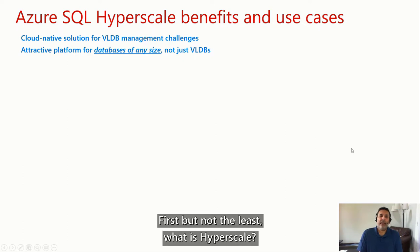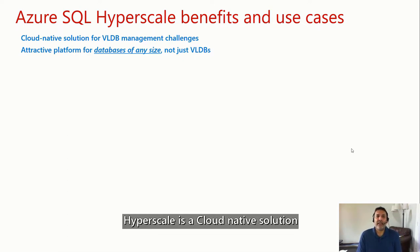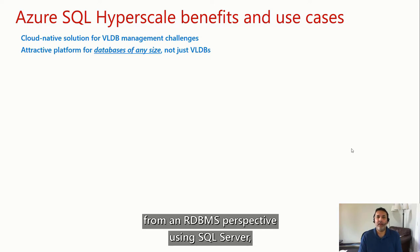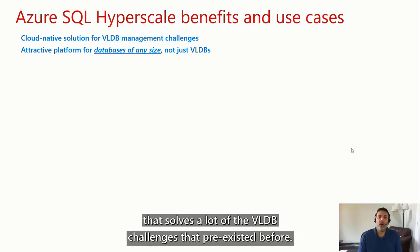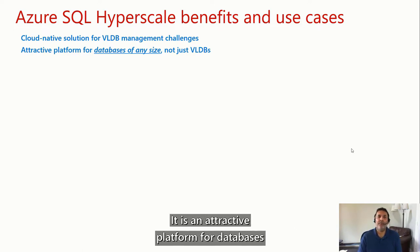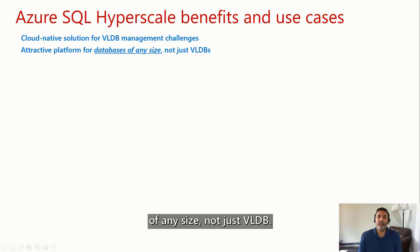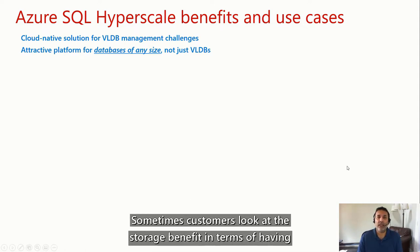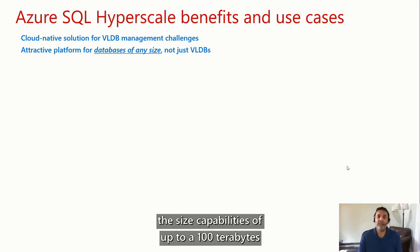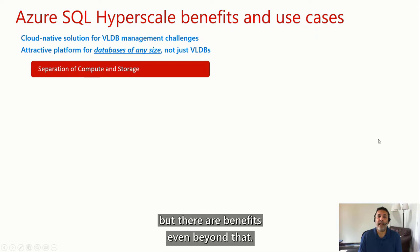So first, what is Hyperscale? Hyperscale is a cloud-native solution from an RDBMS perspective using SQL Server that solves a lot of the VLDB challenges that existed before. It is an attractive platform for databases of any size, not just VLDB. Sometimes customers look at the storage benefit — having size capabilities of up to 100 terabytes — as the only reason to go to Hyperscale, but there are benefits even beyond that.